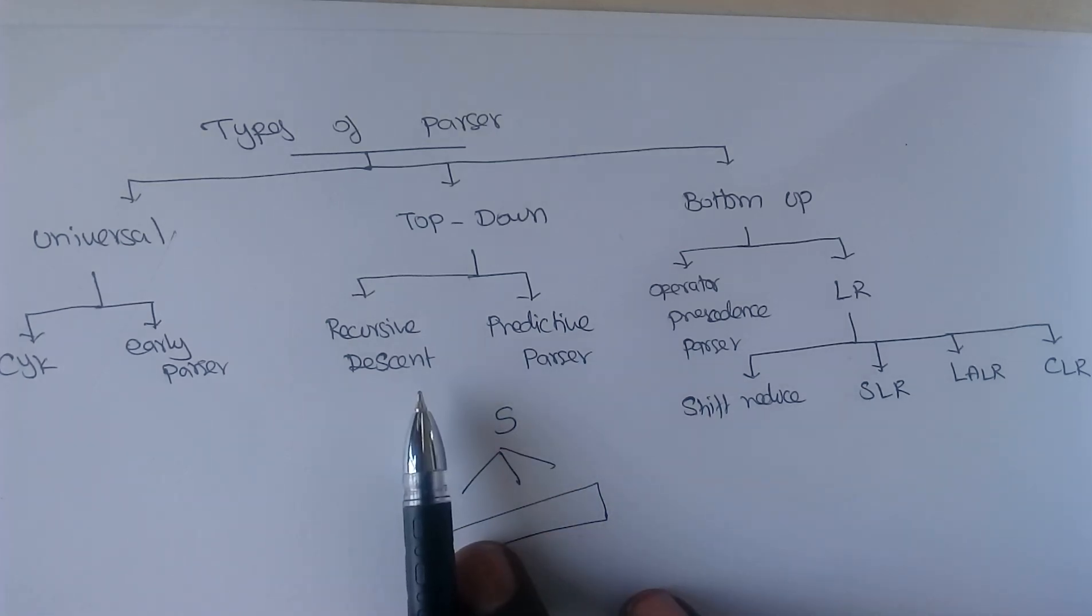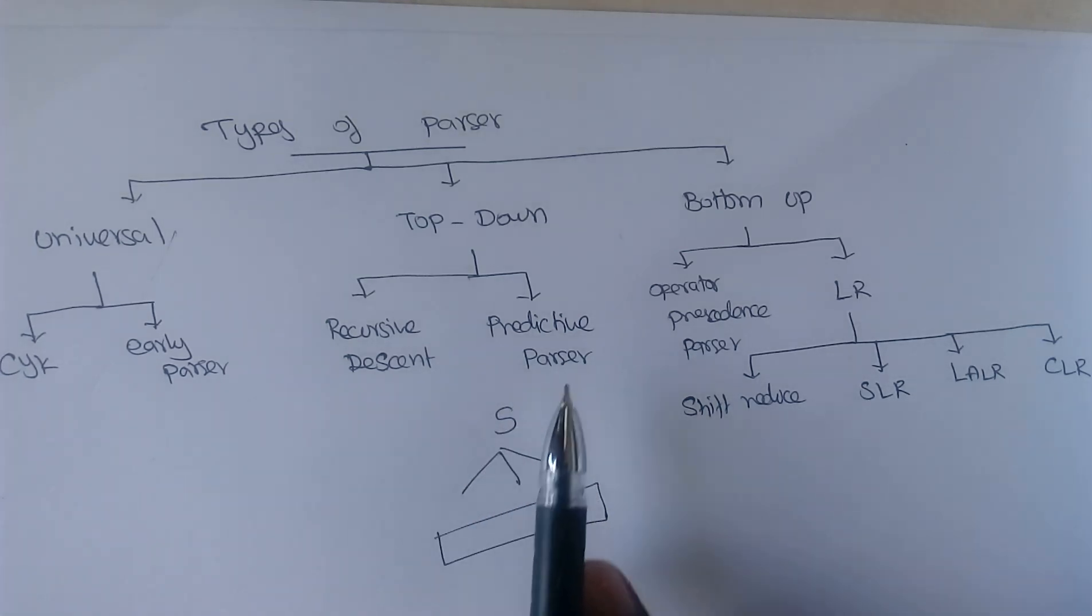And we have two types of top-down parser. One is recursive descent parser and another one is predictive parser.